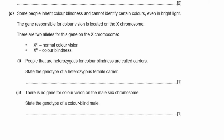Some people inherit color blindness. The gene for color vision is on the X chromosome, with two alleles: X^B for normal color vision and X^b for color blindness. People that are heterozygous for color blindness are called carriers — they can pass it on but are not colorblind themselves. The genotype of a heterozygous female carrier is X^B X^b. A colorblind male has genotype X^b Y — males only need one recessive allele because they have only one X chromosome.